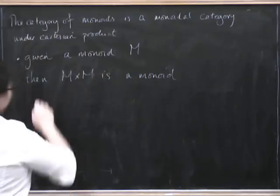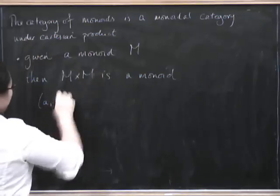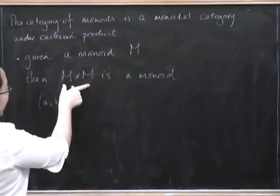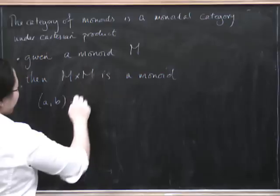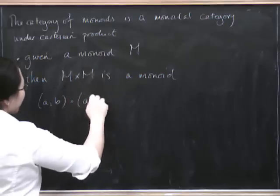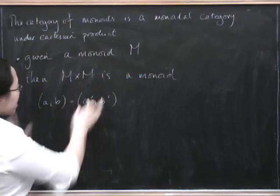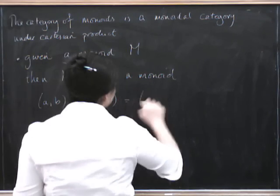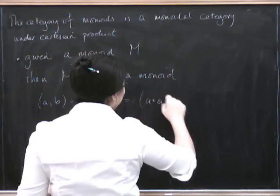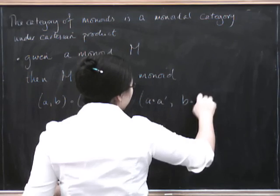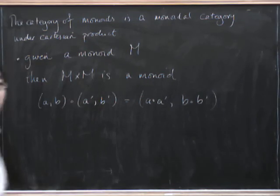Well, how do we define it? Supposing we've got something (A, B) in M cross M, and we want to define a multiplication with (A', B'). Well, what we do is we do it pointwise. So we get out (A·A', B·B'). So that's all going to be absolutely fine.